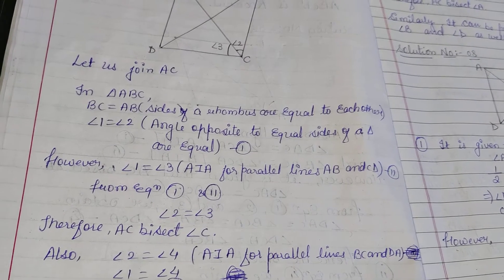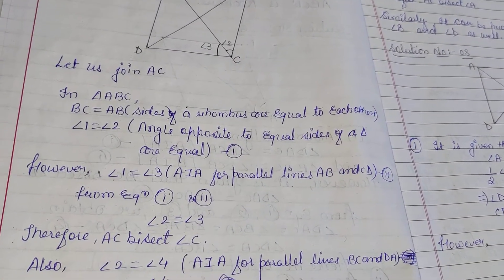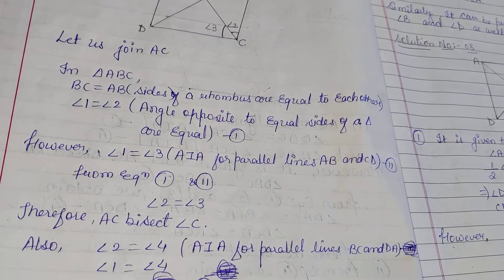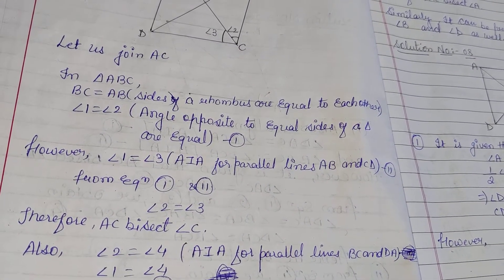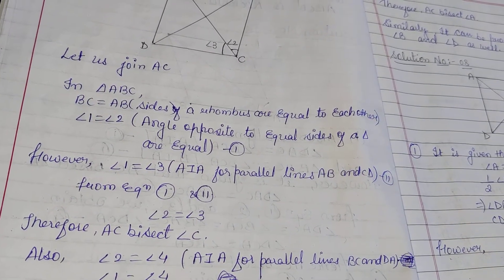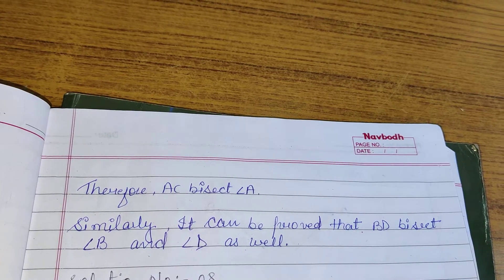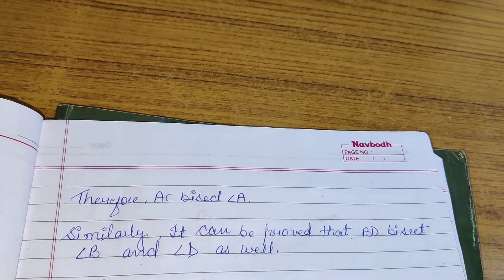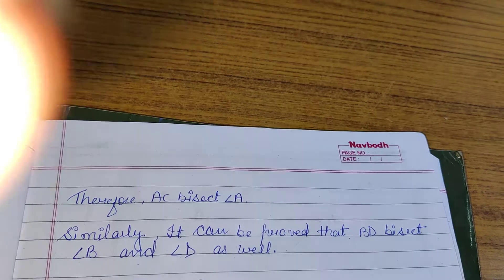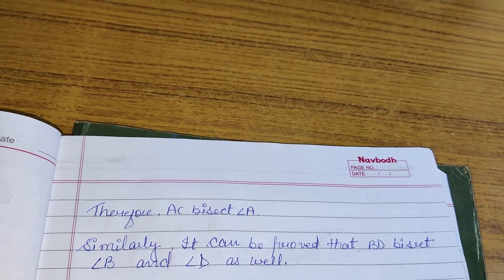We can also write angle 2 is equal to angle 4 — alternate interior angle for parallel lines BC and DA. So angle 1 is equal to angle 4, meaning angle 1 and angle 4 are equal. Therefore, we can say that AC bisects angle A. Similarly, it can be proved that BD bisects angle B as well as angle D.